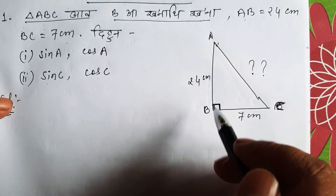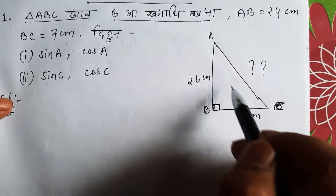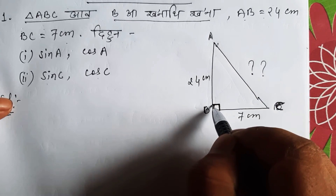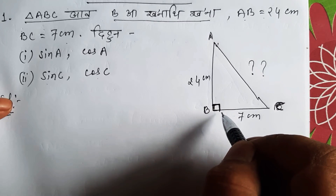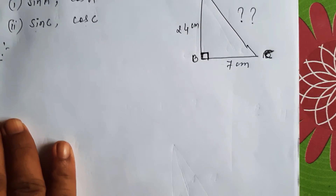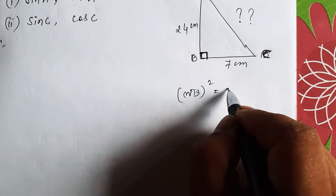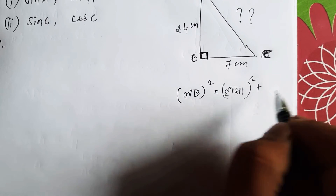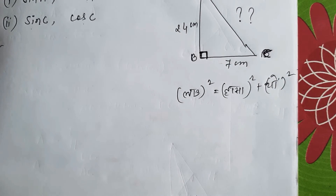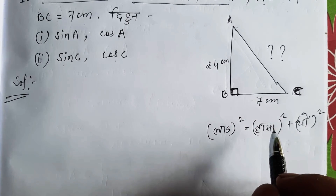We have to find the formula. The formula we have to find involves 90 degrees. The formula is: one side squared plus the other side squared equals the hypotenuse squared.